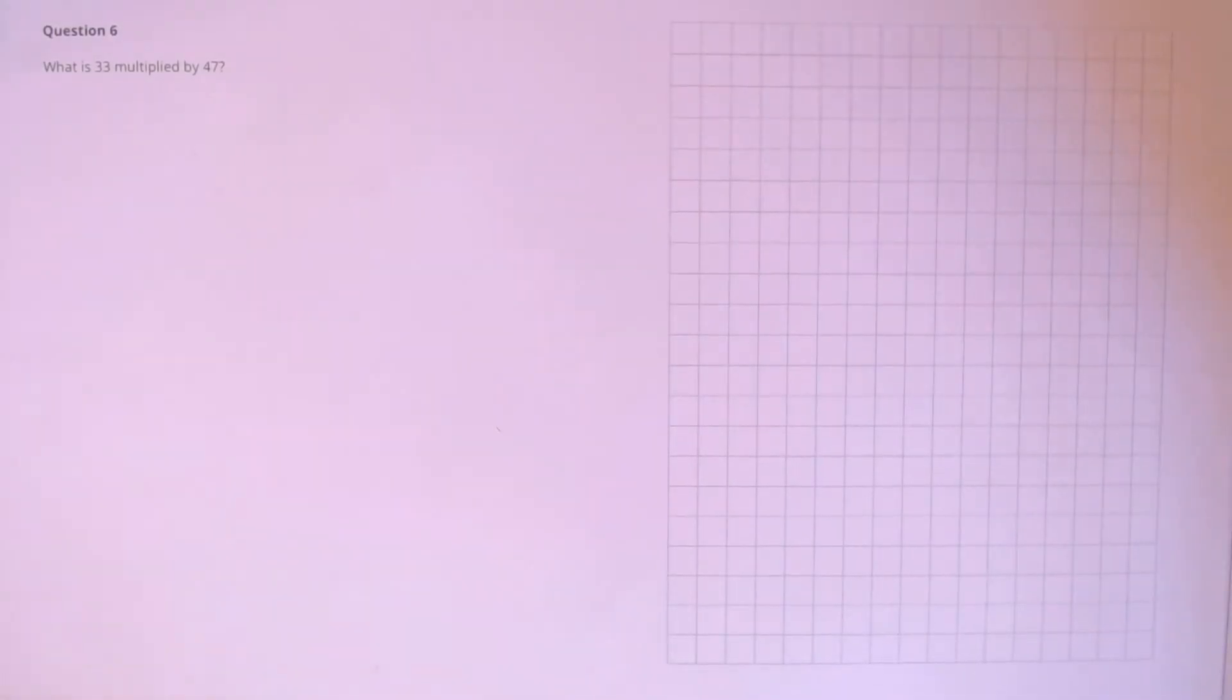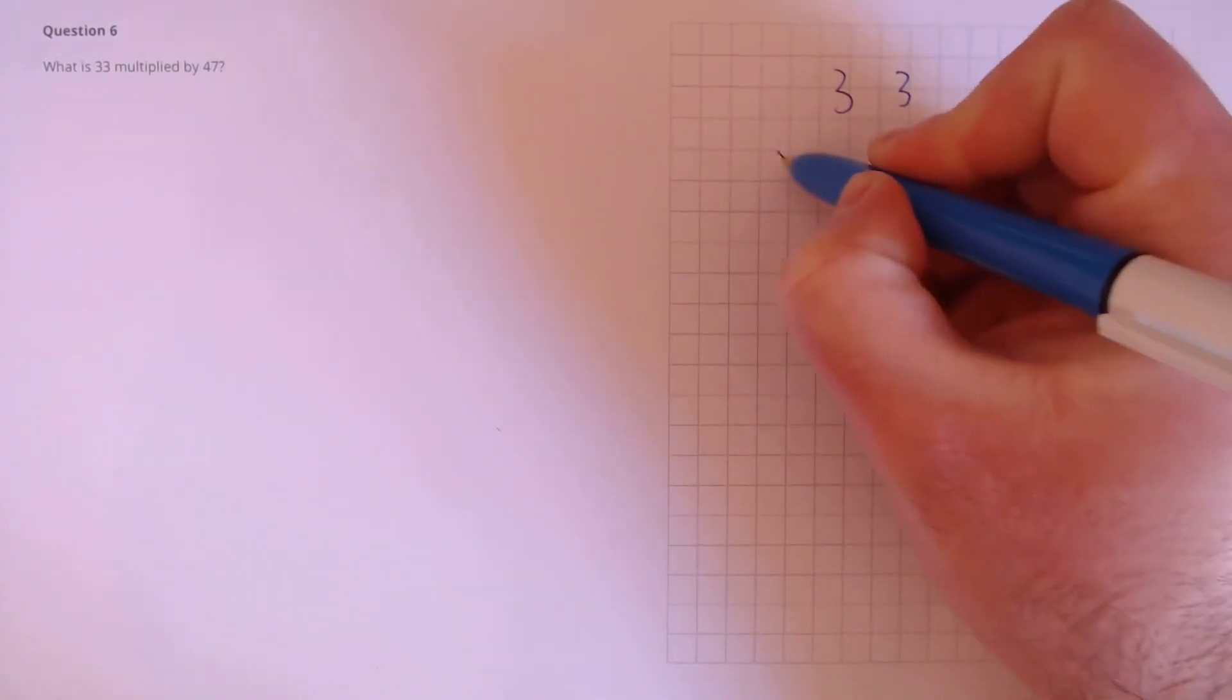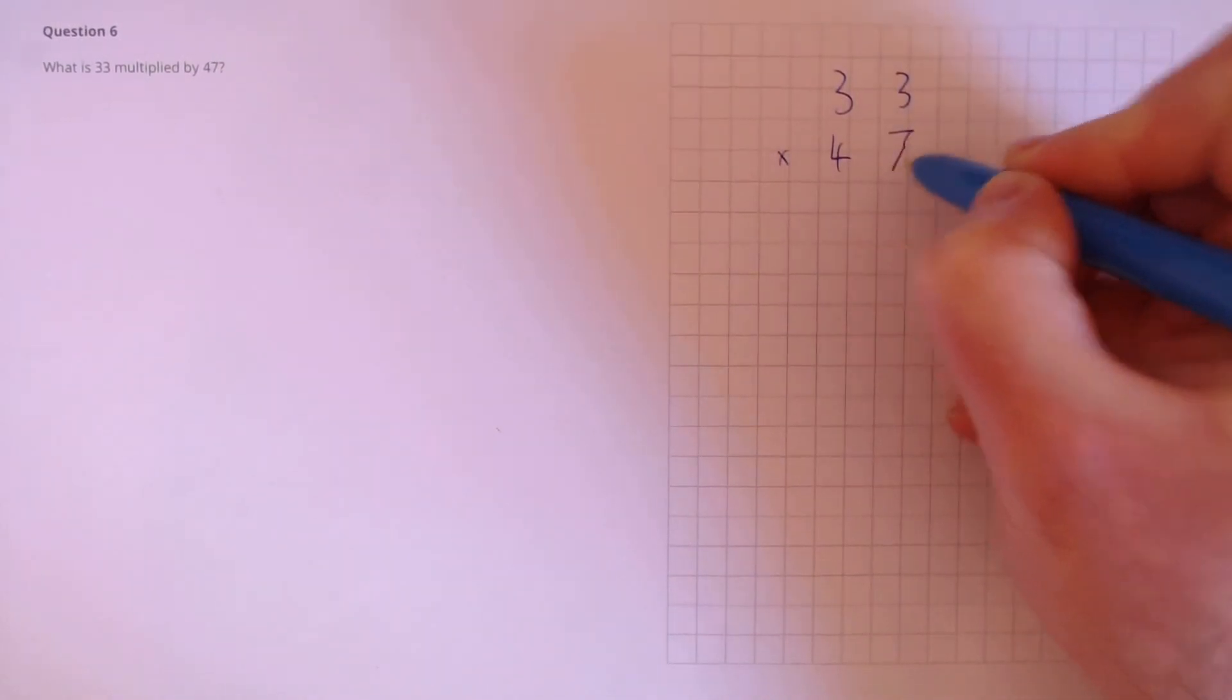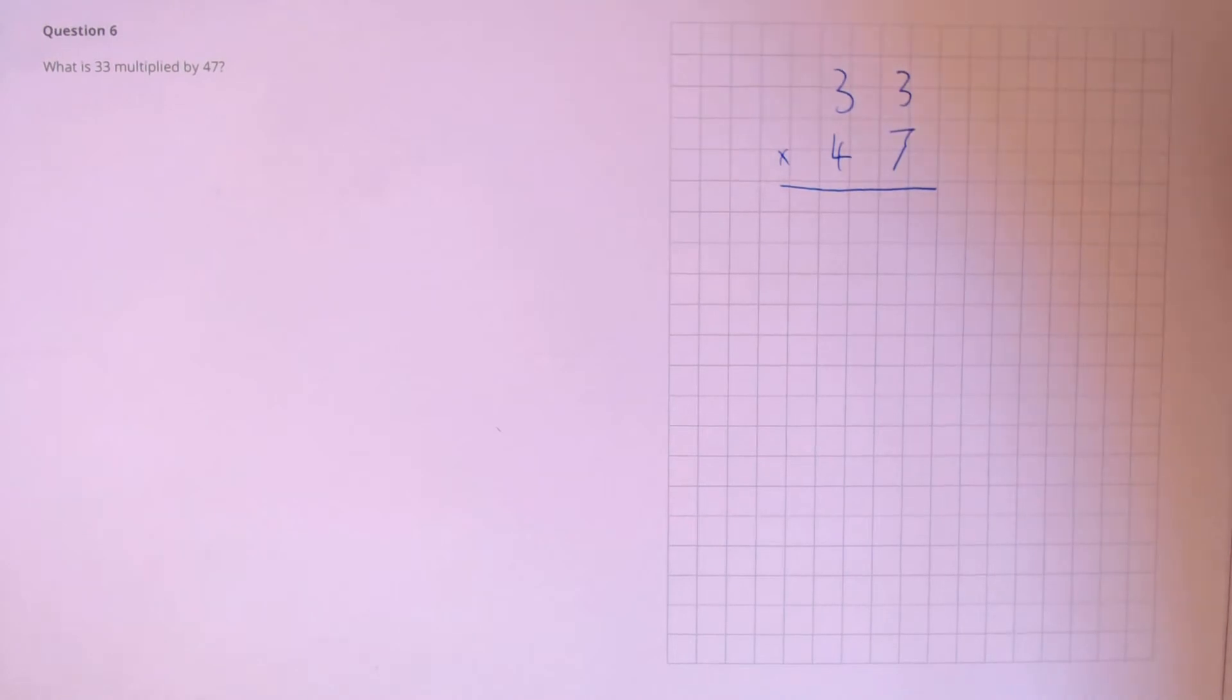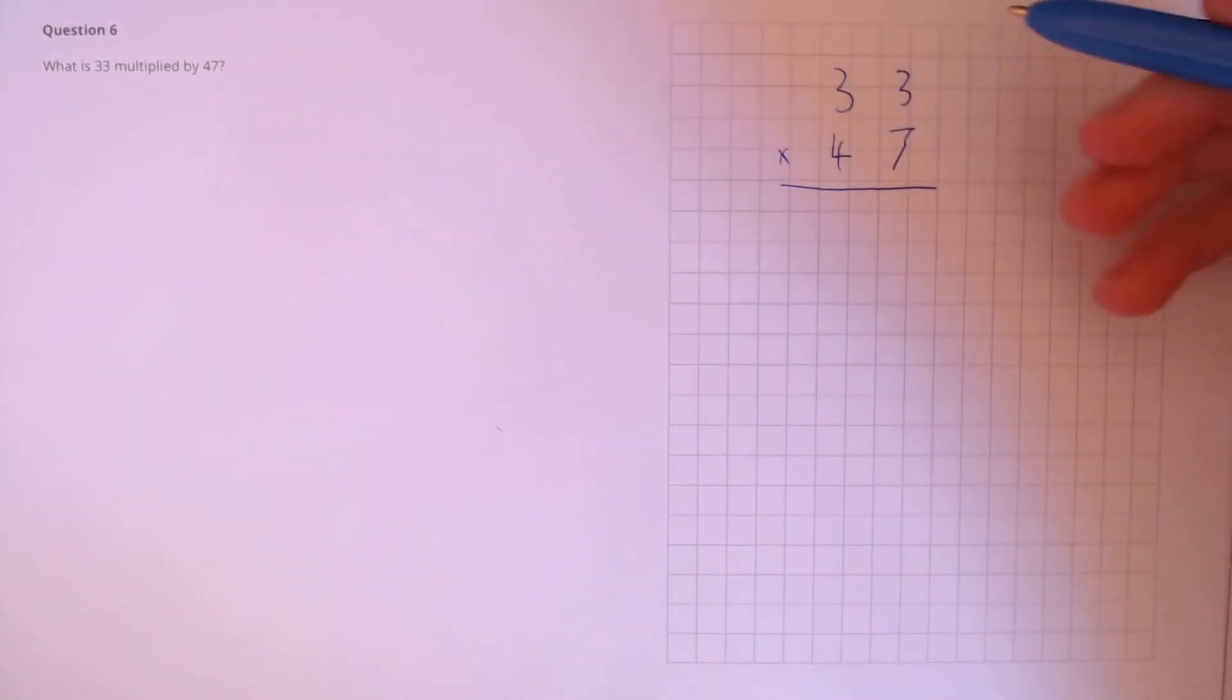Question 6. What is 33 multiplied by 47? So, in order to do this, we're going to write these in a column. 33 times 47. First, let's multiply the units columns.